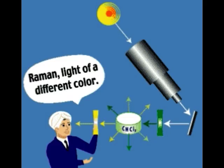Systematic pioneering theory of the Raman effect was developed by Czechoslovak physicist George Plaszczak between 1930 and 1934. The mercury arc became the principal light source, first with photographic detection and then with spectrophotometric detection. In the years following its discovery, Raman spectroscopy was used to provide the first catalogue of molecular vibrational frequencies. Originally, heroic measures were required to obtain Raman spectra due to the low sensitivity of the technique.